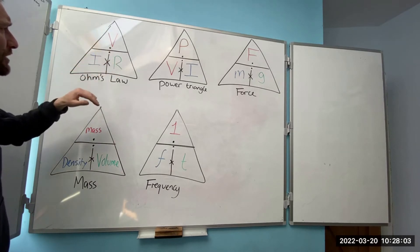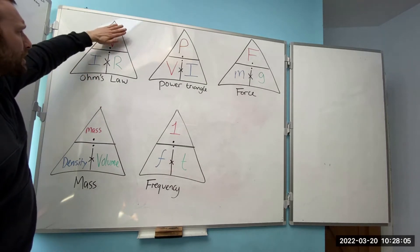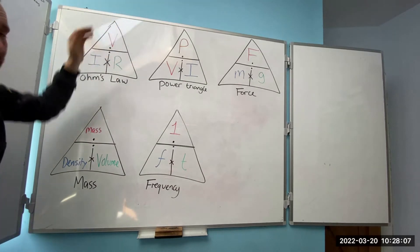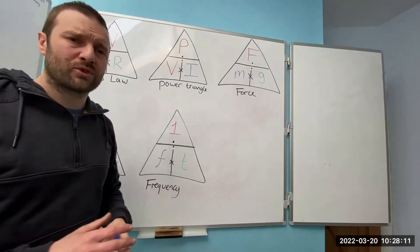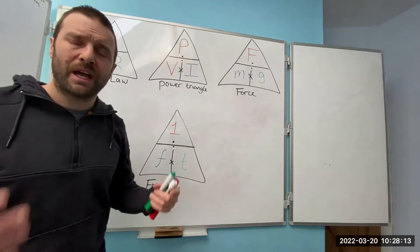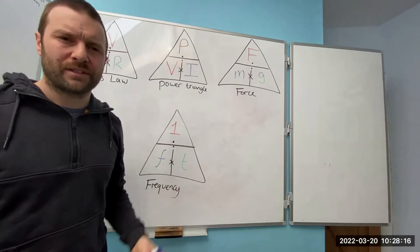And if you're looking for volts, I times R equals volts. That's a really easy way of doing the Ohm's Law triangle because there's only three things to work out, and it saves you having to transpose it every time.